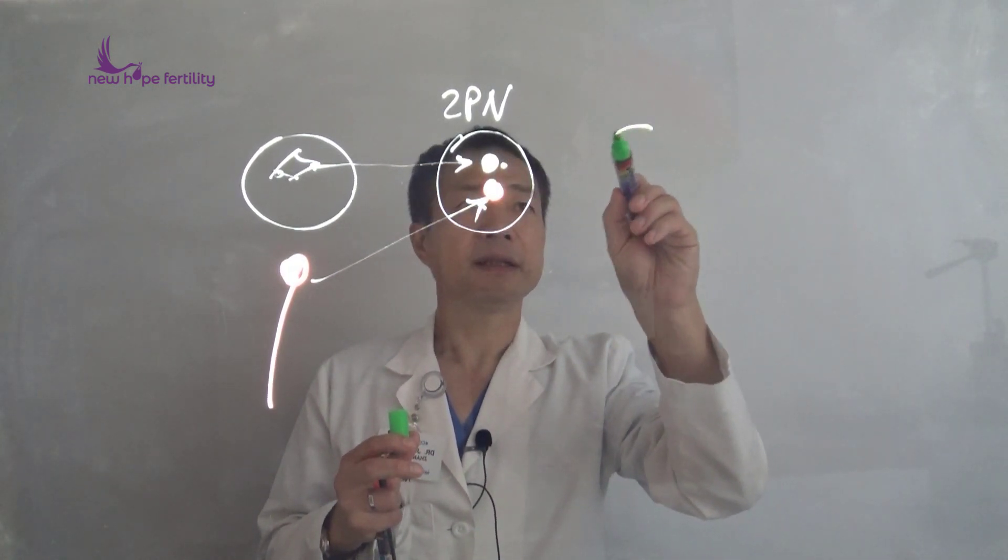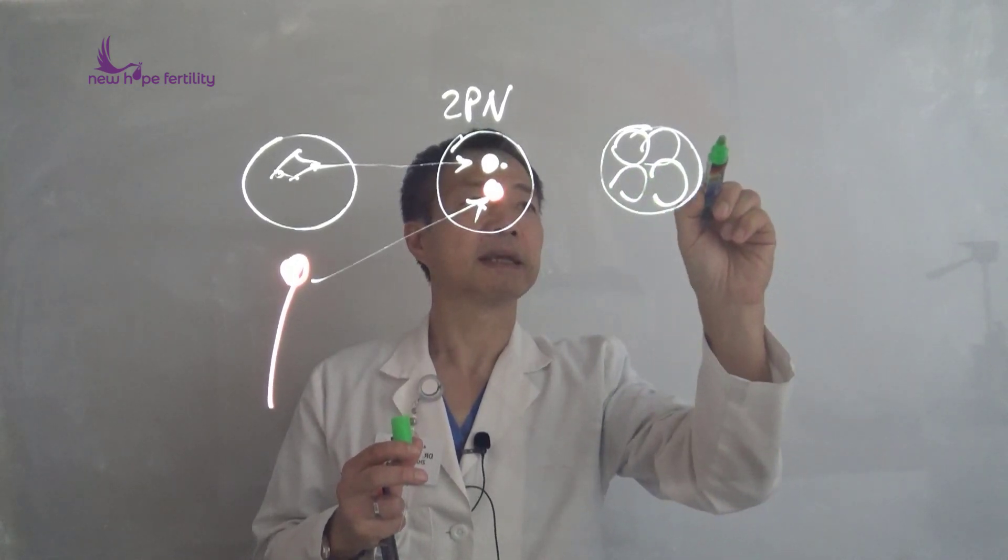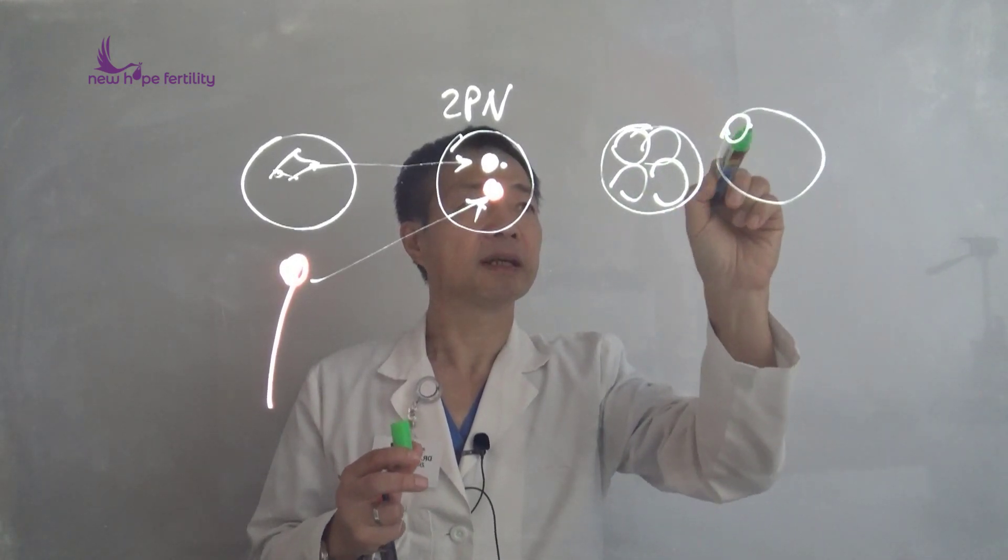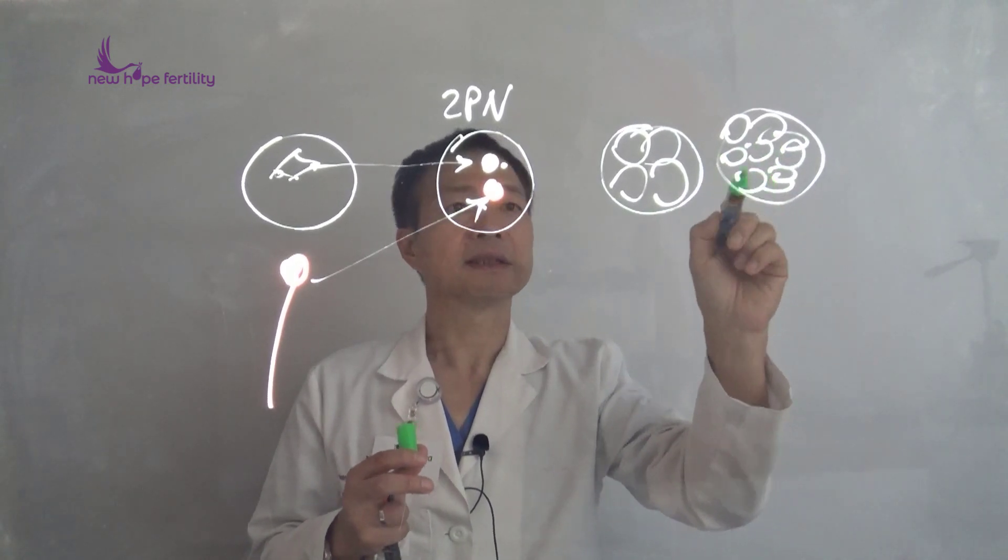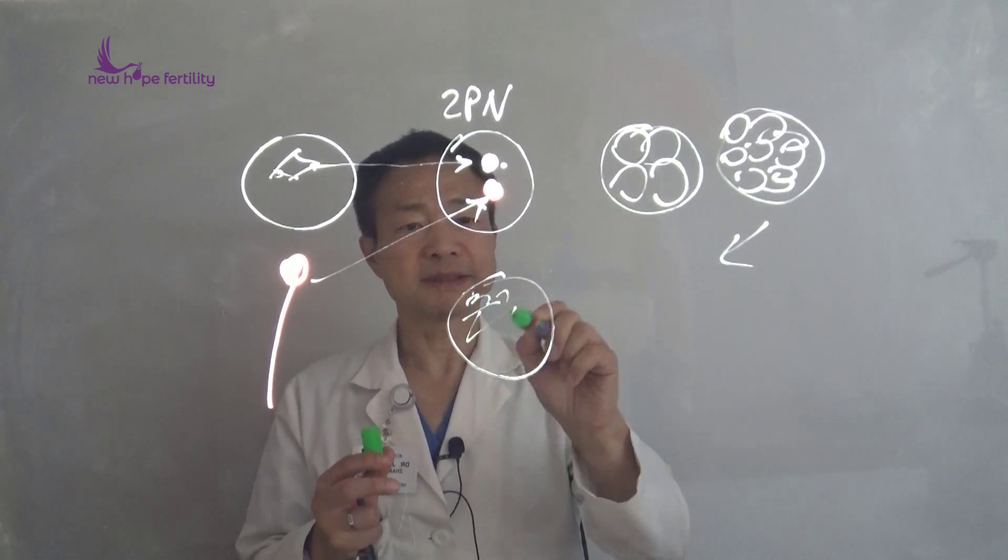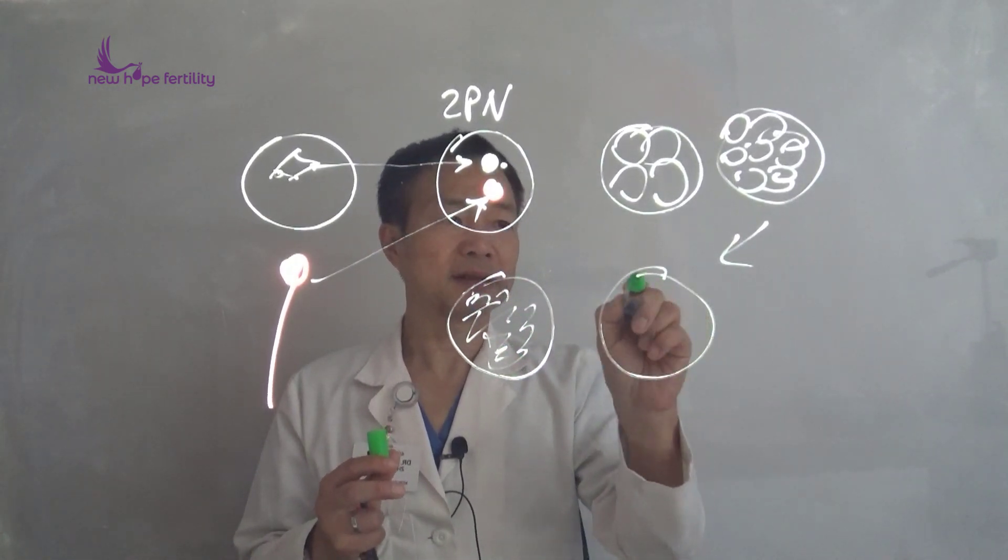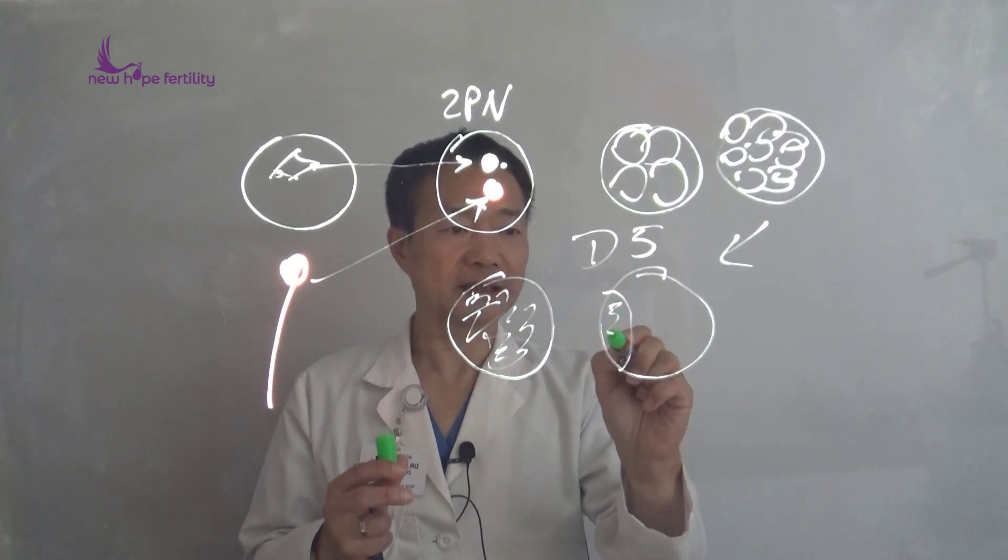The next day it becomes four cells, then about eight cells the following day, then morula. You can see the cell number increases, and by about day 5 it reaches the blastocyst stage embryo.